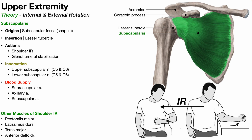There are many more internal rotators than external rotators, so for the vast majority of people, internal rotation is going to be the stronger movement. Pectoralis major and latissimus dorsi are pretty large, strong muscles that can assist the subscapularis with shoulder internal rotation.